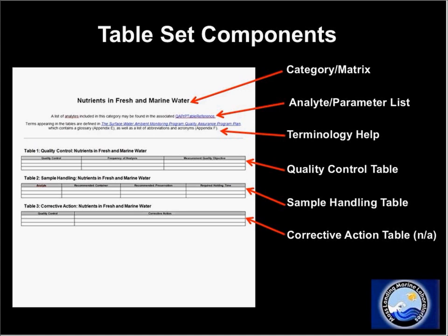Another caveat relates to this third table. You'll notice there's a corrective action table in addition to the QC and sample handling tables. I'm going to be de-emphasizing that today because it's really meant more as advice to project folks, lab folks, and field folks — a troubleshooting tool they can reference in response to certain analytical failures. Because it doesn't include any bona fide SWAMP requirements, we're going to de-emphasize it in favor of the QC and sample handling tables.